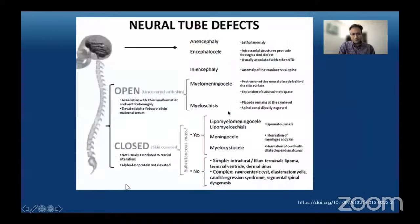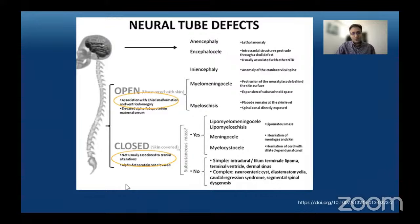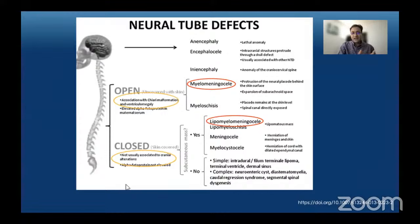This classification chart for neural tube defects is very useful. Spinal defects can be open or closed. Open defects are associated with Chiari malformation and ventriculomegaly while closed defects are usually not associated with intracranial findings. The two open neural tube defects to remember are myelomeningocele, by far the most common, and myeloschisis. The most important closed defect presenting with a skin-covered subcutaneous mass is lipomyelomeningocele, with the less common myelocystocele. When evaluating a neural tube defect, the first step is to identify whether it is open or closed — this completely changes the differential diagnosis.